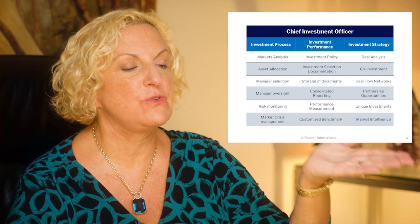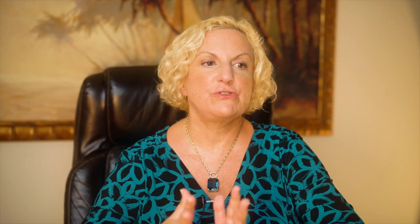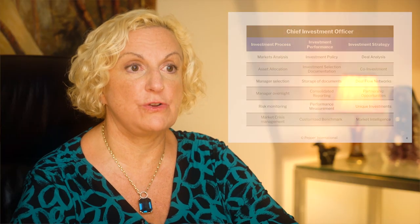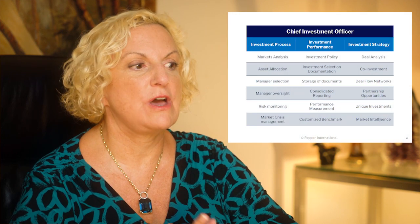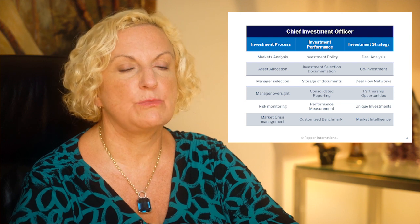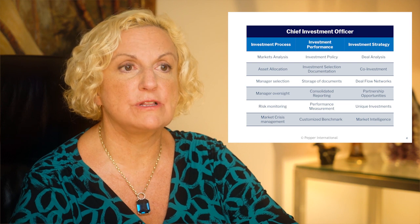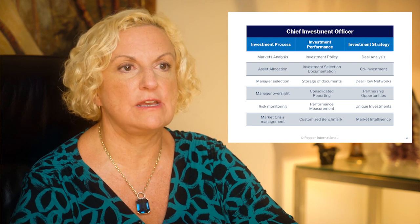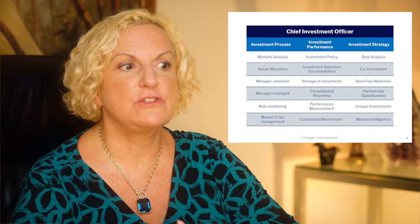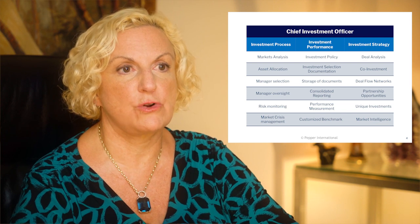This chart here shows us all of the functions that the chief investment officer is going to oversee for your family. First, he or she is going to help you develop an investment process that works for your family. That process is going to include a number of important steps. Then they're going to oversee investment performance and help you measure all of the different types of investments appropriately, so you really know how much money you're making and how much risk you're taking. And finally, they're going to have a strategy and they're going to help you find the kinds of co-investments and deals that are important if you really want to grow your fortune.